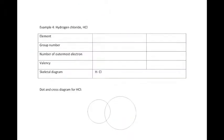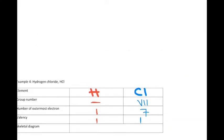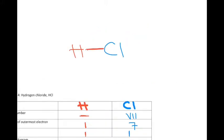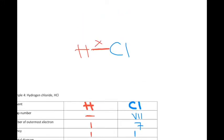Let's see for HCl. Element H and element Cl. Element H — outermost electrons: 1, valency is 1. Chlorine has group number 7, number of outermost electrons 7, valency 1. So when we draw the skeletal formula, there is H and there is Cl. There's a bond between them. Hydrogen forms one bond, chlorine forms one bond, so one bond between them. Hydrogen contributes one electron and chlorine contributes one electron.